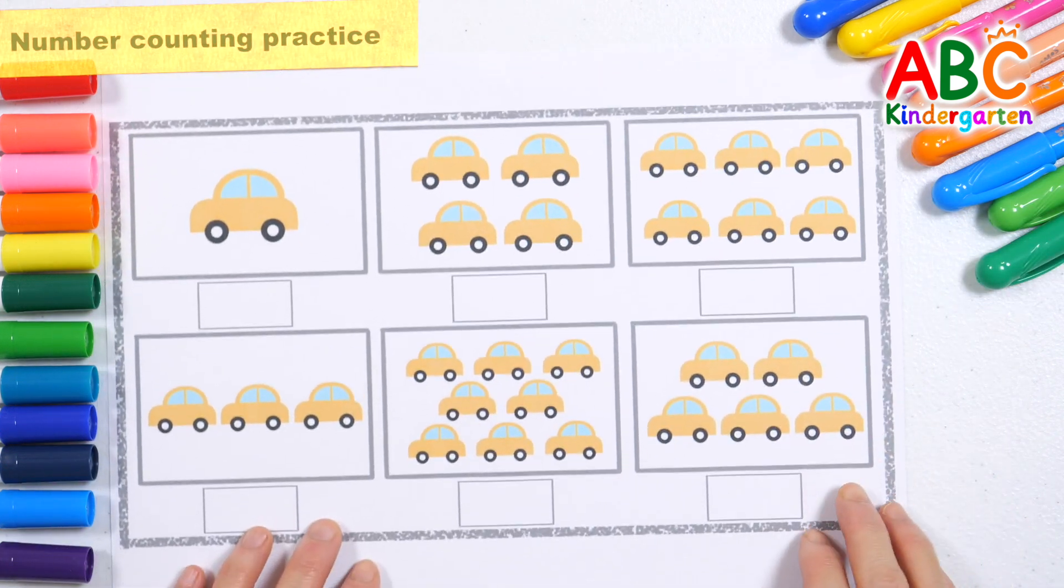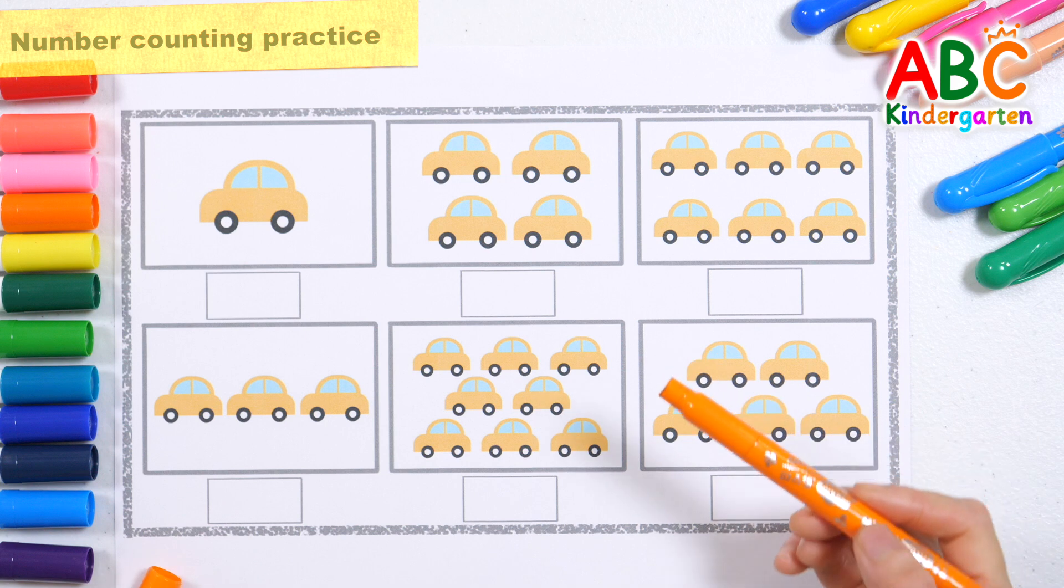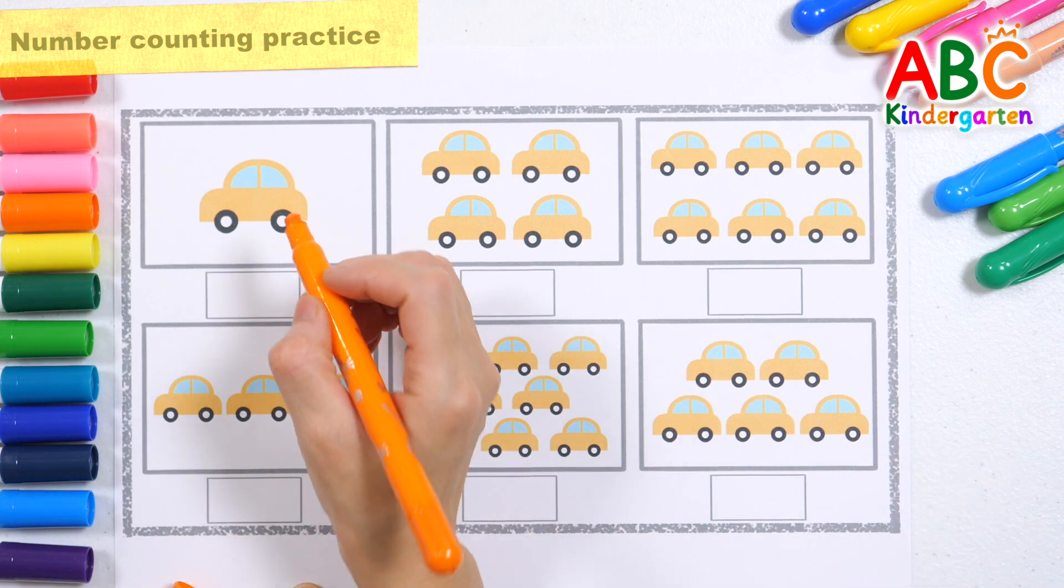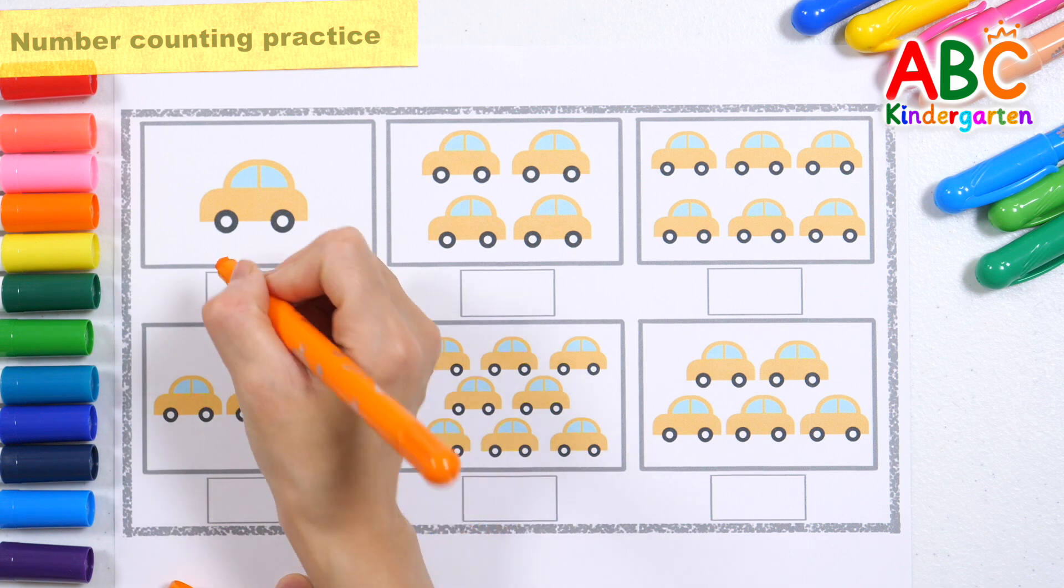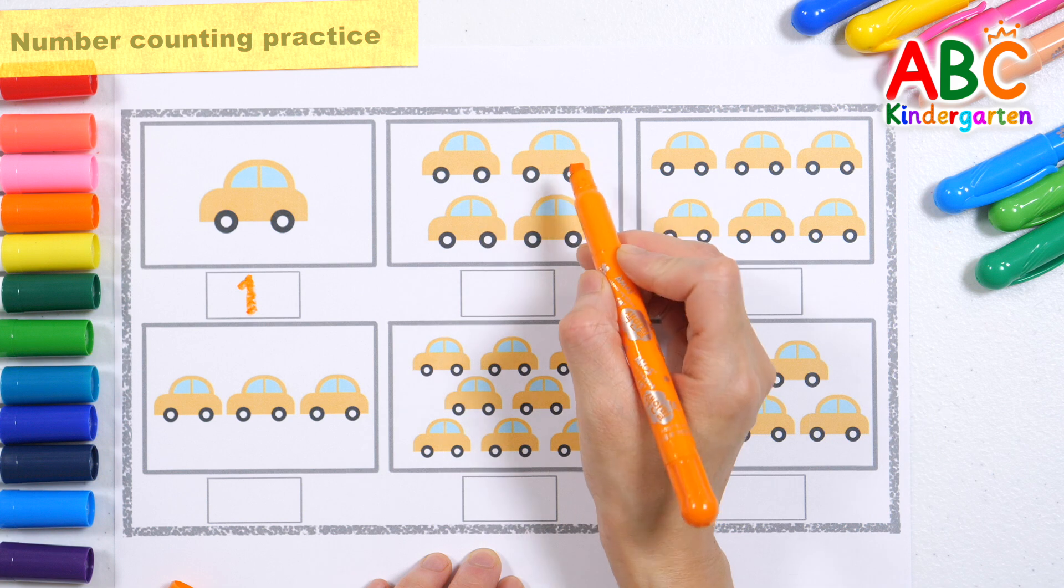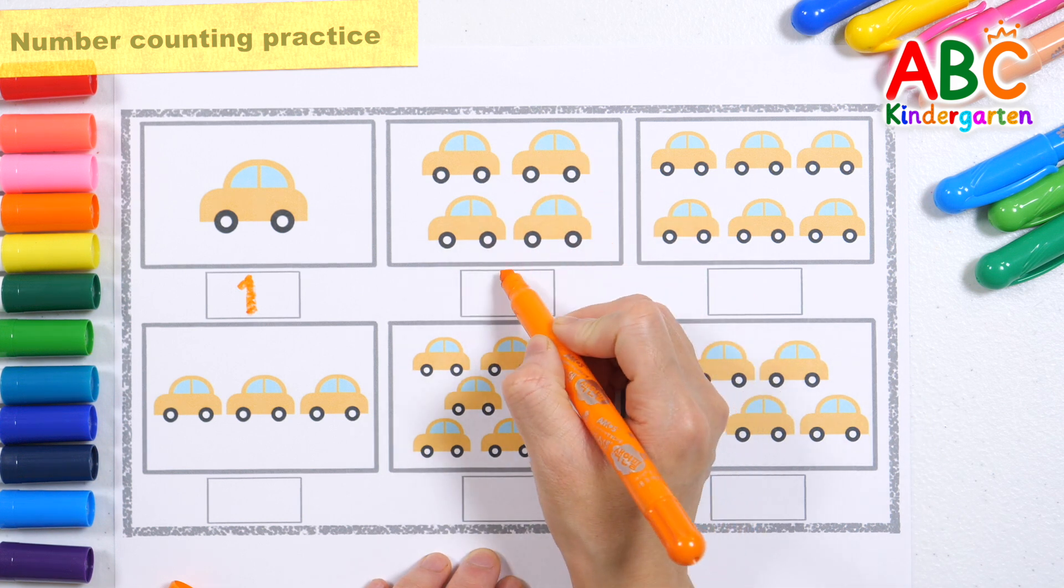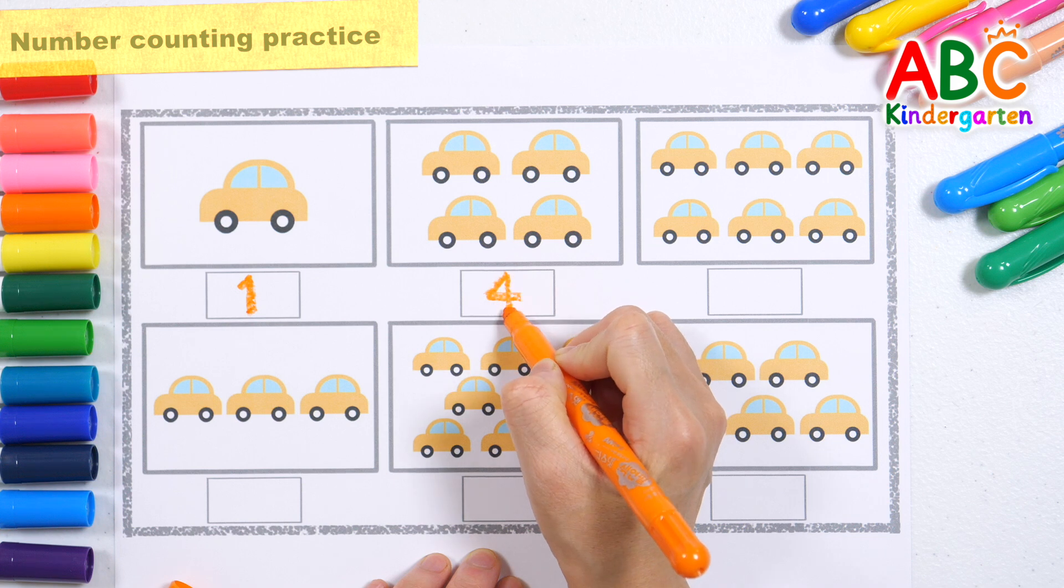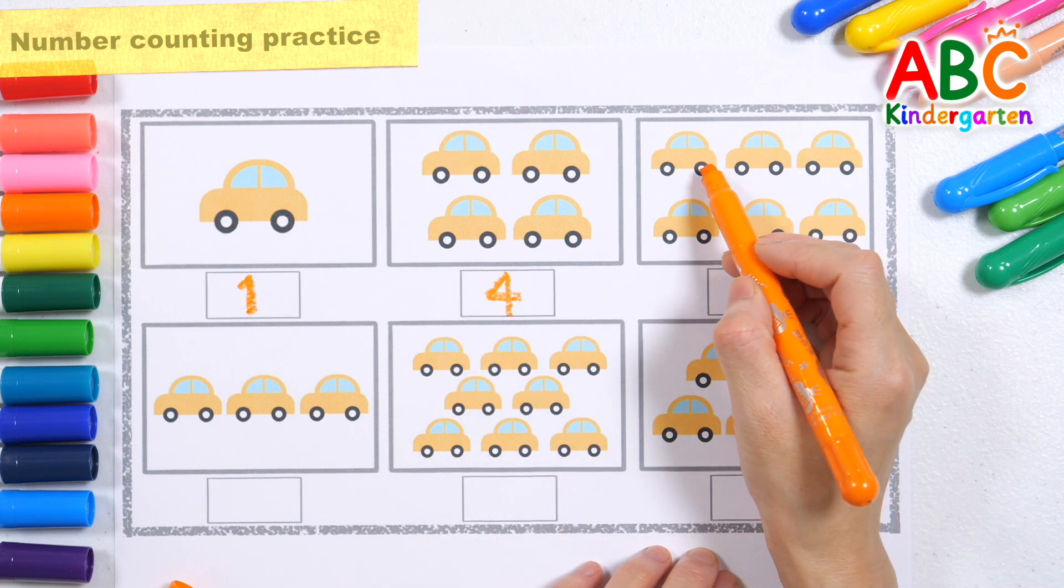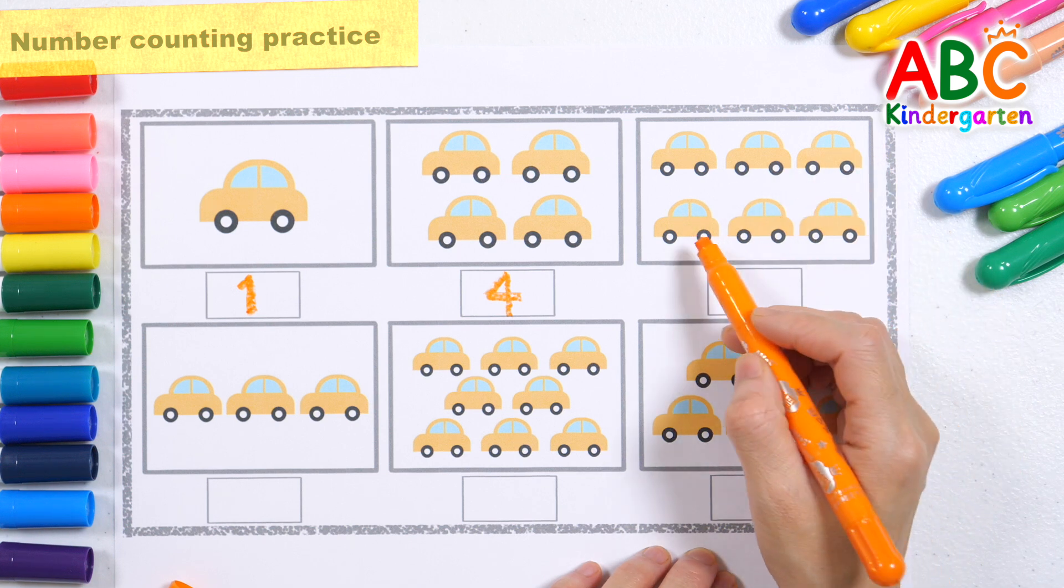Let's count the yellow cars one by one and write the numbers in the blank spaces. How? One. One, two, three, four.